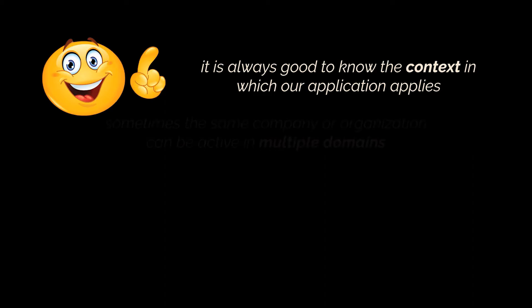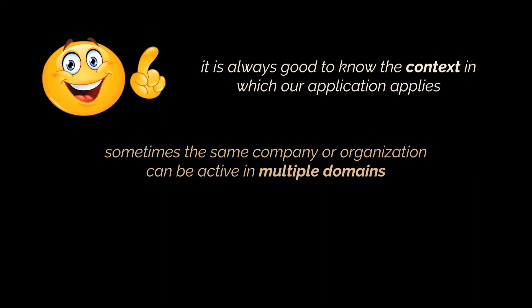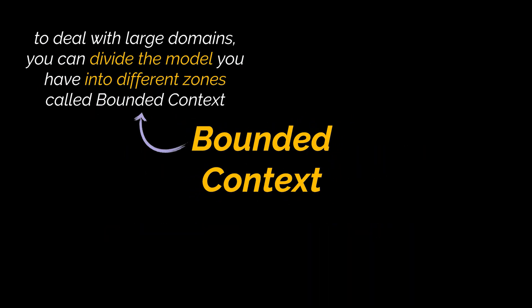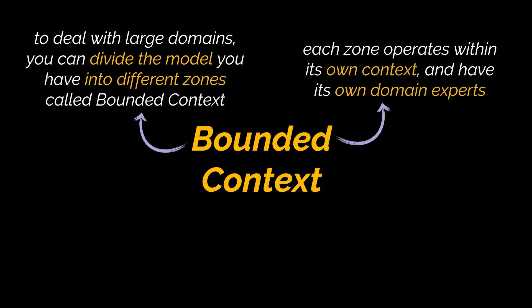Sometimes the same company or organization can be active in multiple domains — like shopping, delivery, transport, repairs — all at the same time. Or sometimes the domain you have in mind might be very broad or non-specific, like food. What exactly in the food industry? To deal with large domain models and large organizations, you can divide the model into different zones which are called bounded contexts.